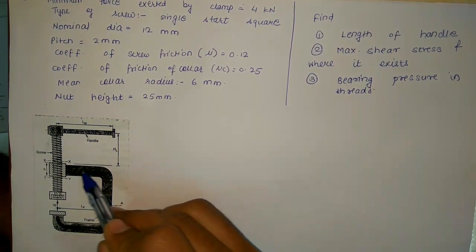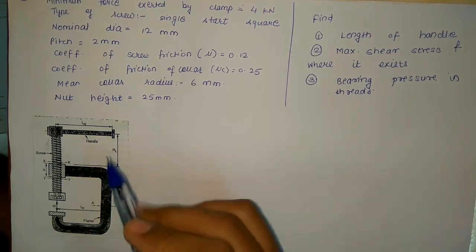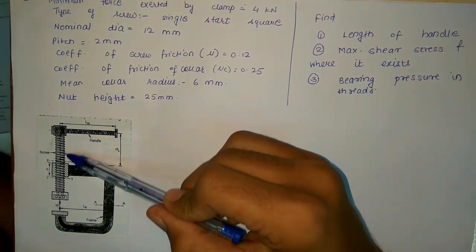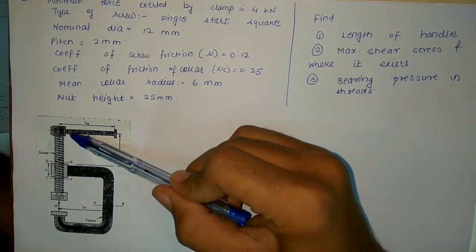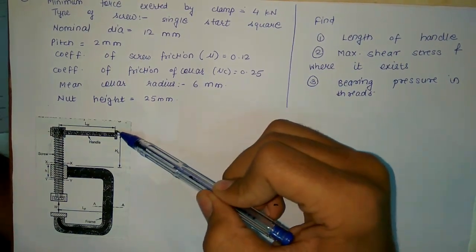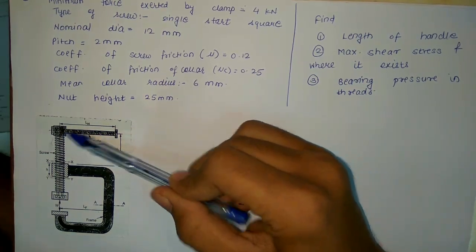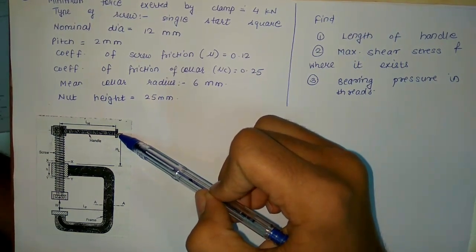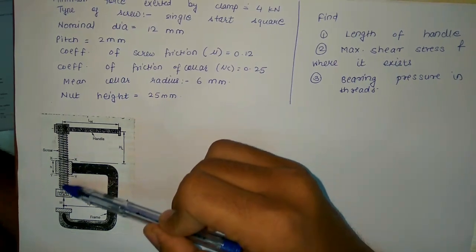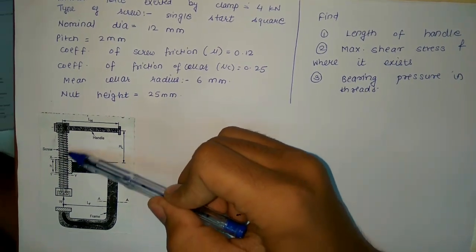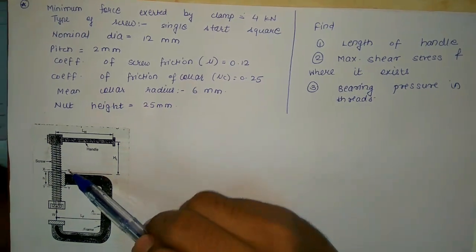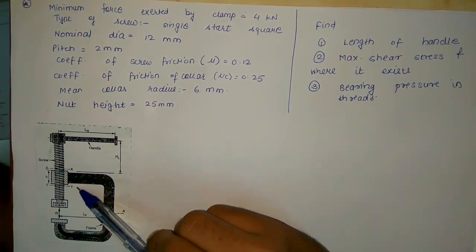The frame is made of mild steel or cast iron. We have a screw with threads of a certain pitch and lead. The length of the handle is measured from the centroidal axis to the end of the lever. A nut is embedded in the frame through which the screw converts rotational motion into translational motion. We have two sections: XX and YY.